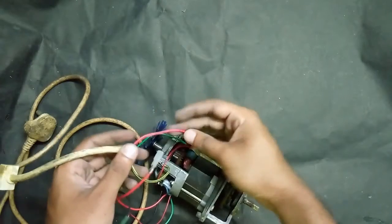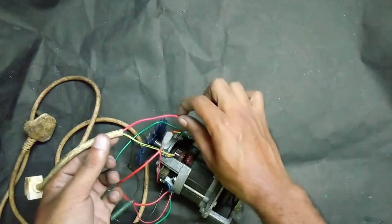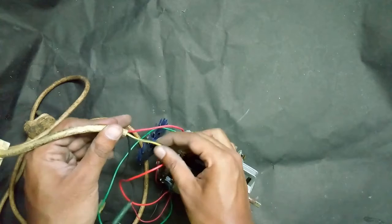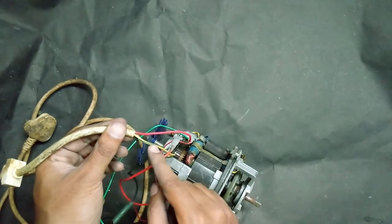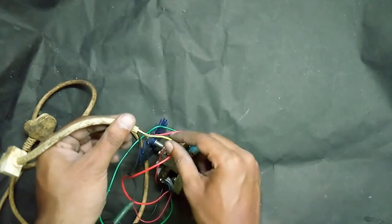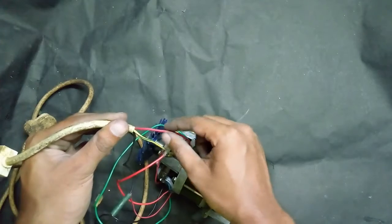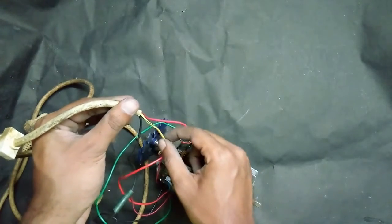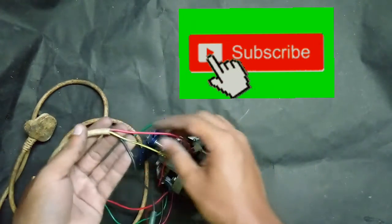The red one over here is the phase. This wire which is the combination of yellow and green color, this one is the earth wire. And the black over here is the neutral wire. So it consists of phase, earth, and neutral—these three wires are coming out of it.